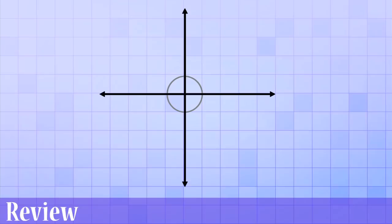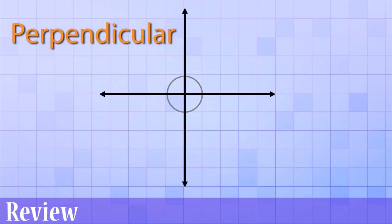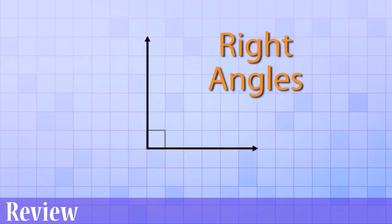When intersecting lines form all exactly equal angles, the lines are perpendicular. Perpendicular lines form right angles. Right angles are square corners and we use a special square symbol to show that an angle is a right angle.